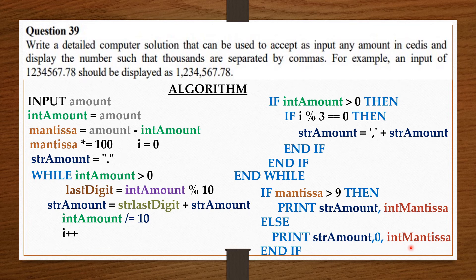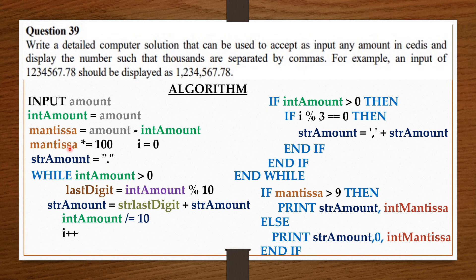Now, the reason we are using int_mantissa and not mantissa directly is that in case the user inputs a number with 3, 4, 6, or more decimal places, we want to truncate it. If we don't use int_mantissa, the computer will print something like 1234567.789 — because we are limiting to 2 decimal places, we need to truncate the extra part. We convert the mantissa to an integer. So if the mantissa was 78.9, when we convert it to an integer we get only 78 — the fractional part has been truncated. That will be it.